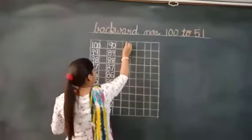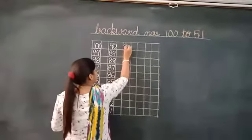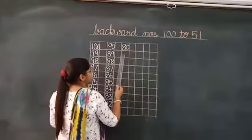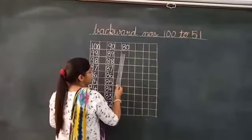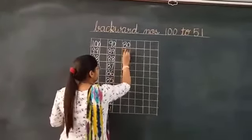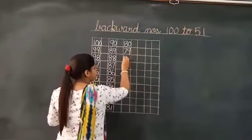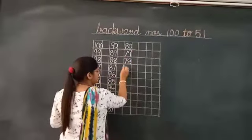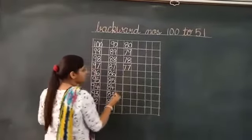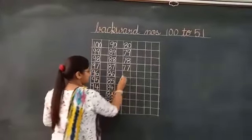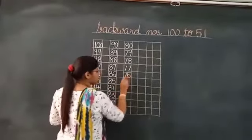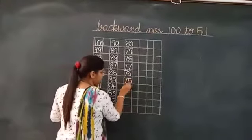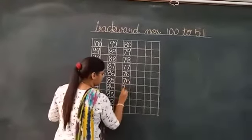Answer is 80. Which number will come before 80? That is 79, 78, 77, 76, 75.